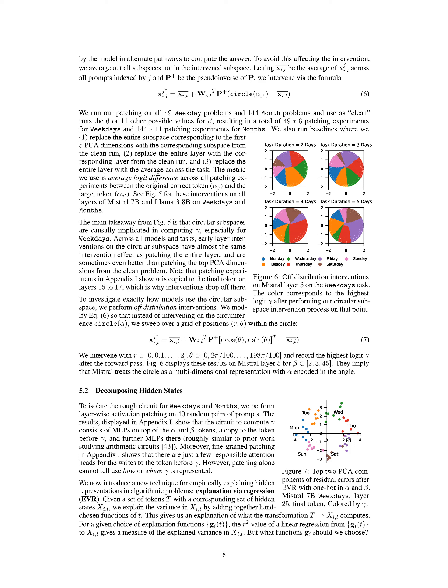We conduct patching experiments on all weekday and month problems to assess the impact of circular subspaces on model performance. The results indicate that circular subspaces play a significant role in computing gamma, particularly for weekdays. Early layer interventions on circular subspaces show promising effects, sometimes outperforming other intervention methods. Off-distribution interventions reveal that Mistral treats the circle as a multidimensional representation with alpha encoded in the angle.